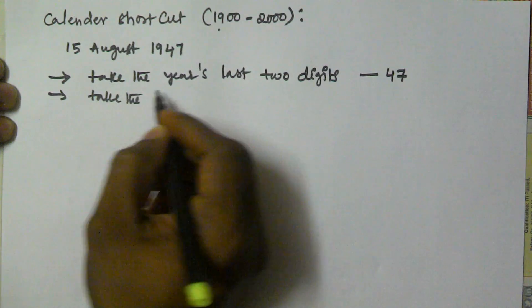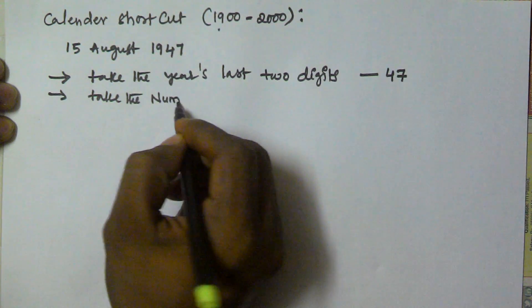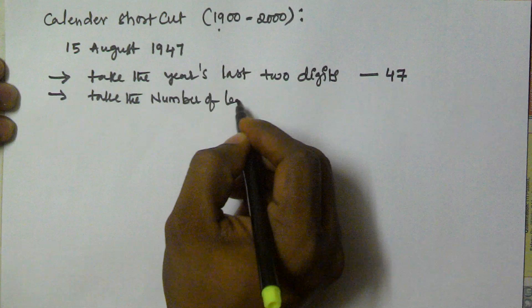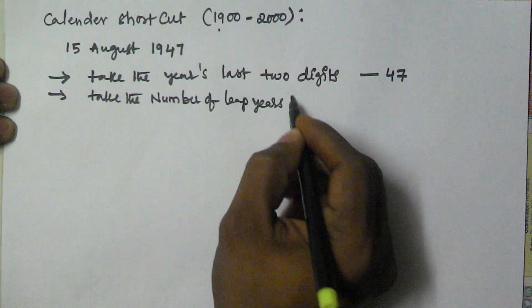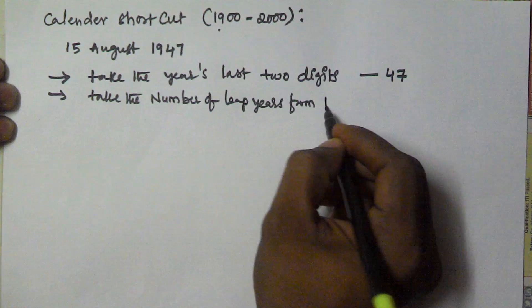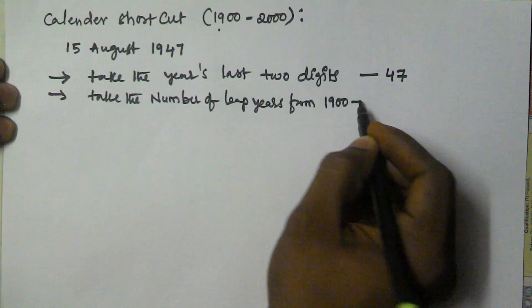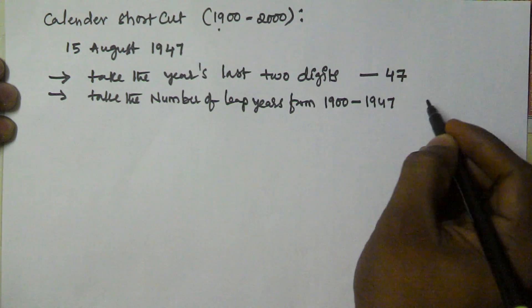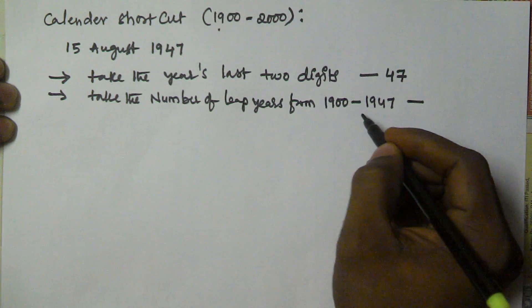Take the number of leap years from 1900 to the given year 1947. So the number of leap years from 1900 to 1947 is 11.